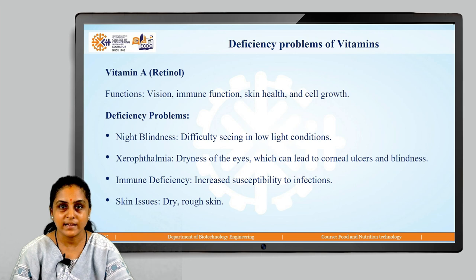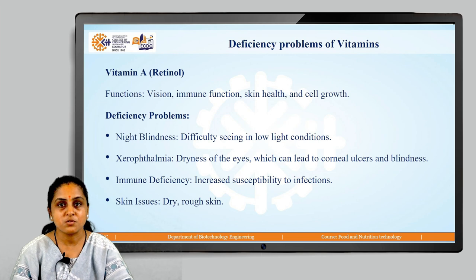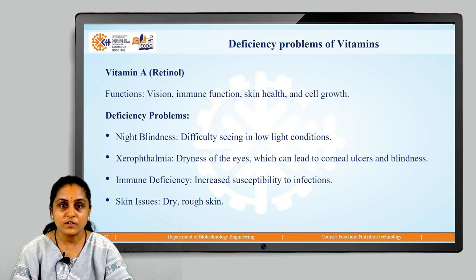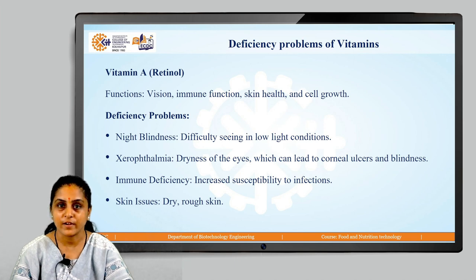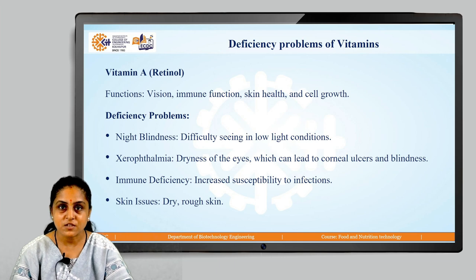What are the deficiency problems associated with vitamin A? Night blindness, wherein we have difficulty seeing in low light conditions. We also have xerophthalmia, which leads to dryness of the eyes and can lead to corneal ulcers and blindness. Immune deficiency is another deficiency problem of vitamin A, wherein there will be increased susceptibility to infections. Also, deficiency of vitamin A may cause skin issues like dryness and roughness.